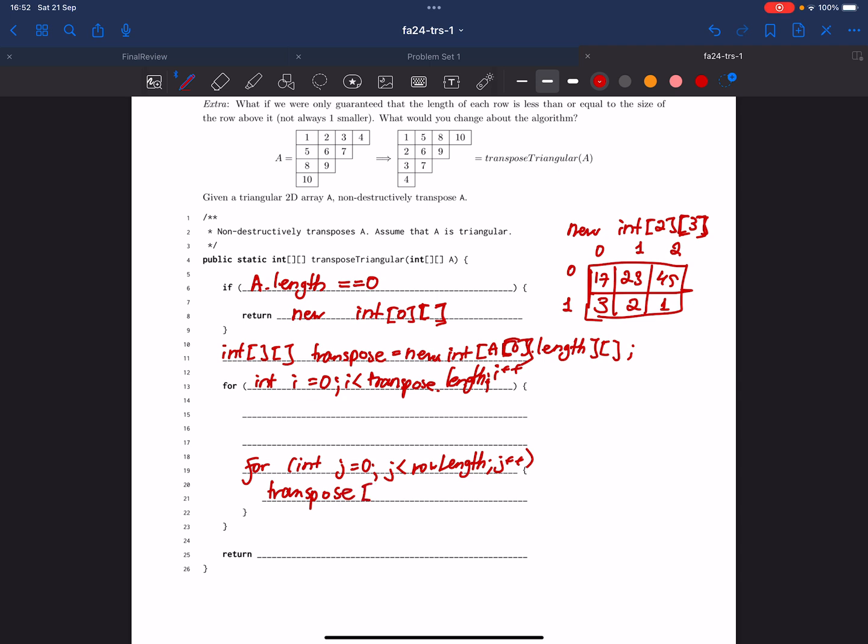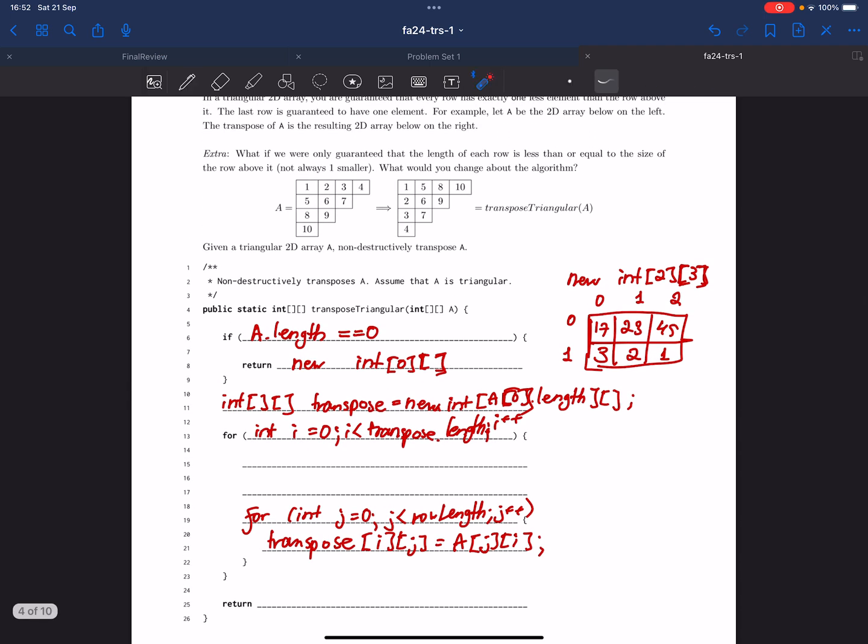So transpose[i][j] has to be equal to A[j][i], which means that we're doing exactly what I talked about before we started solving this question, which is we are going to look at the x and y coordinates of each of these values and then swap them around.